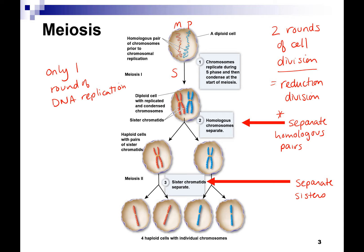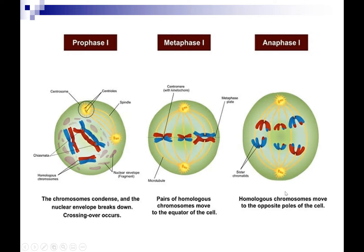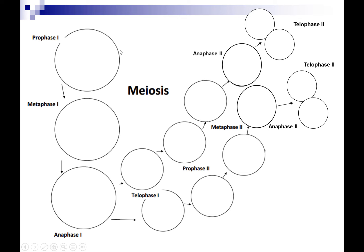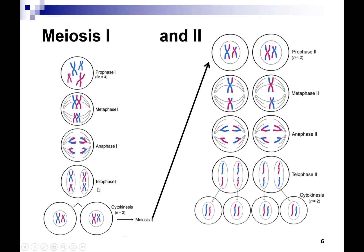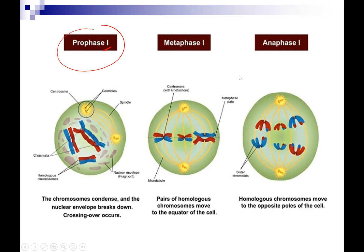Something you want to think about are similarities and differences between meiosis and mitosis. What's really interesting and allows for genetic diversity happens in prophase one. We talk about meiosis one and meiosis two — they both go through PMAT. We have to differentiate the first set of cell divisions from the second. In prophase one, chromosomes condense so that we can see them, just like in mitosis. But what's different in prophase one is you have something called crossing over.